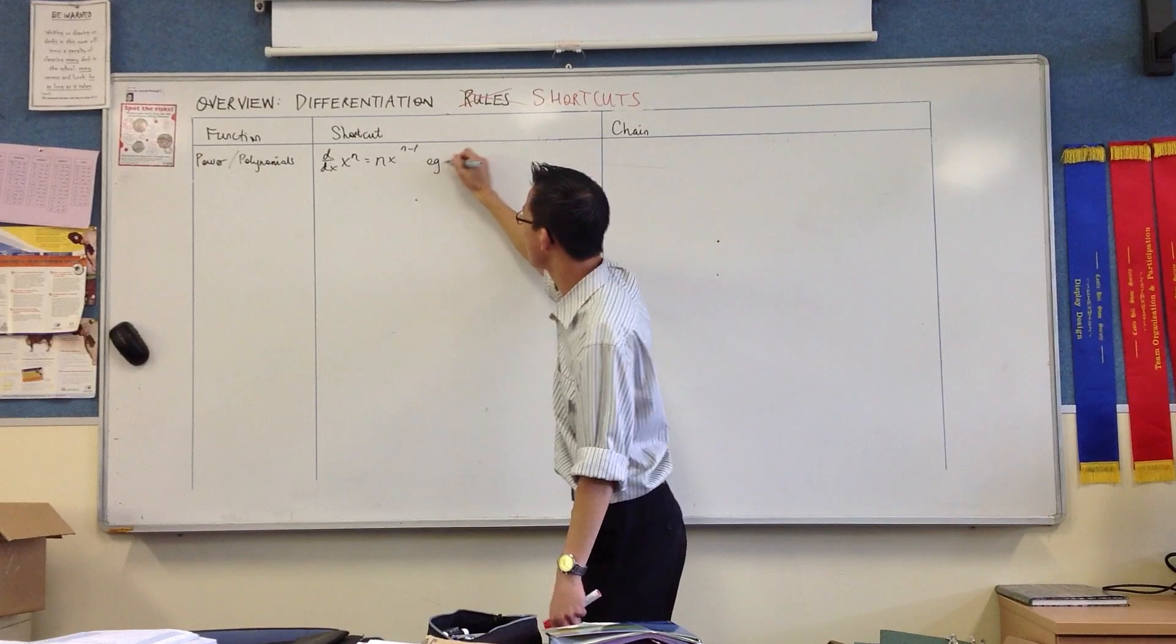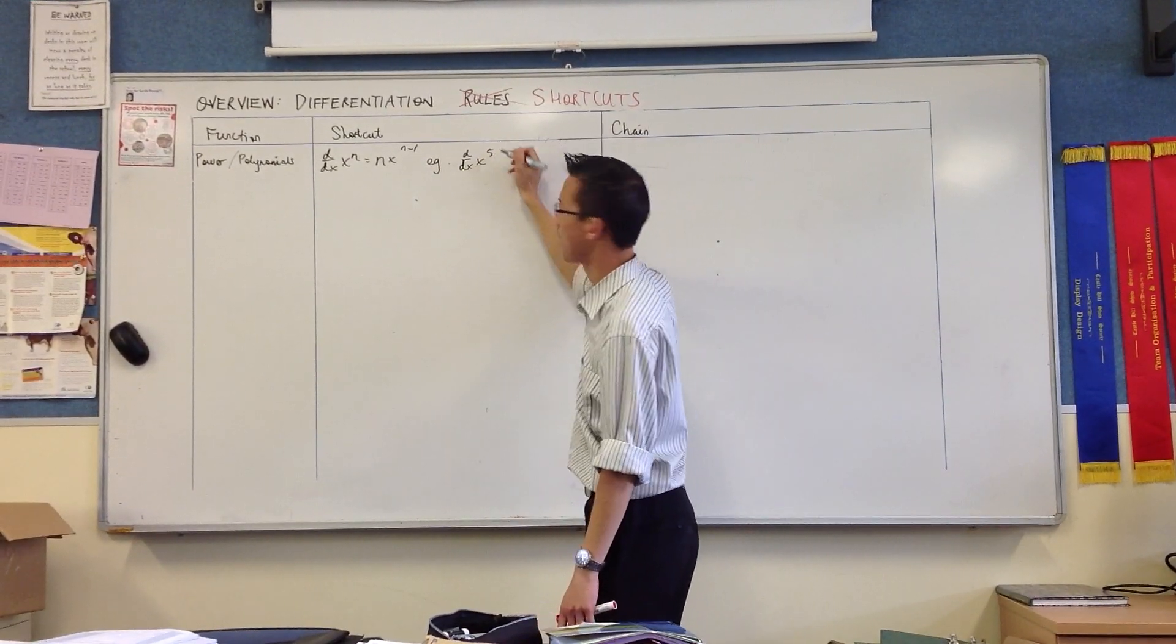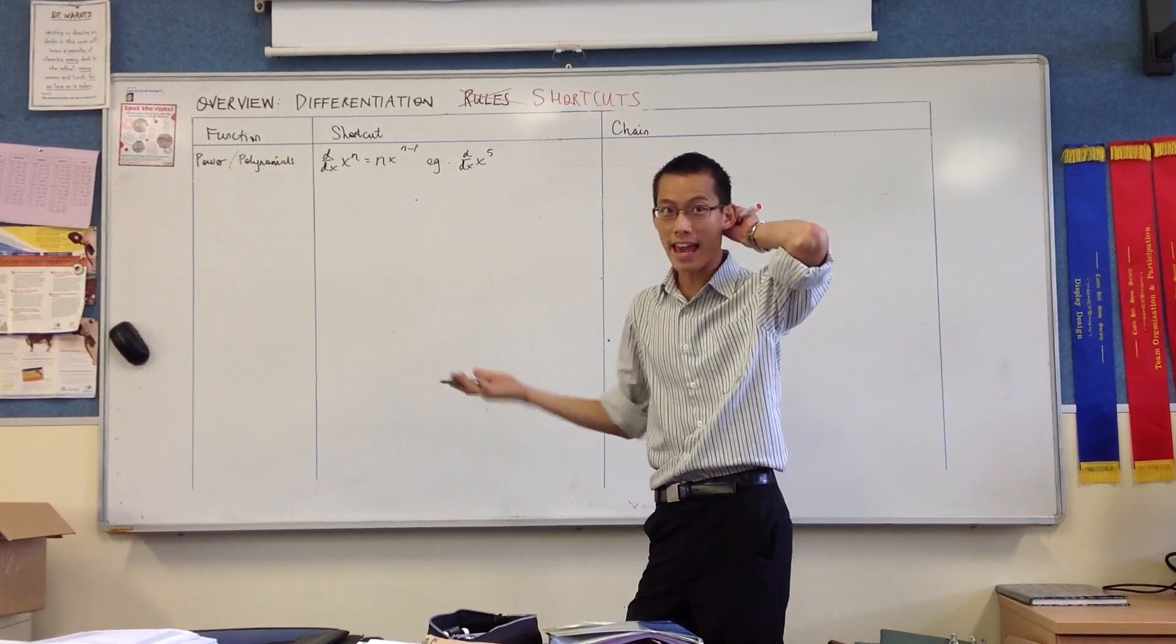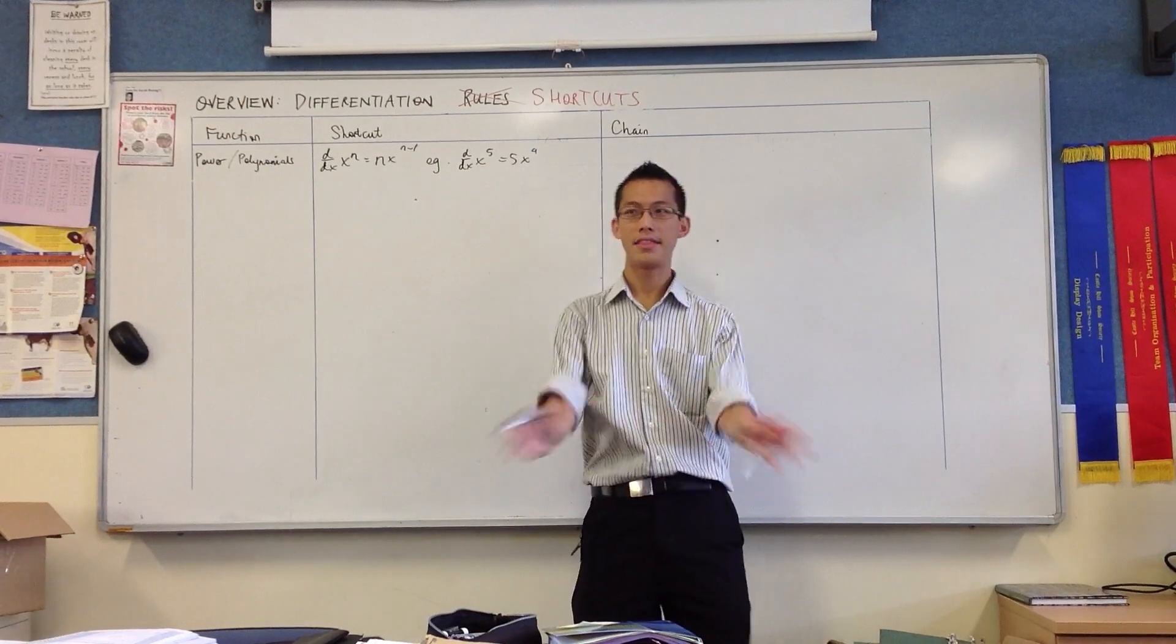For example, let's differentiate x to the 5. So the n is 5, so you're just going to have n x to the n minus 1, which is 5x to the 4. That's it.